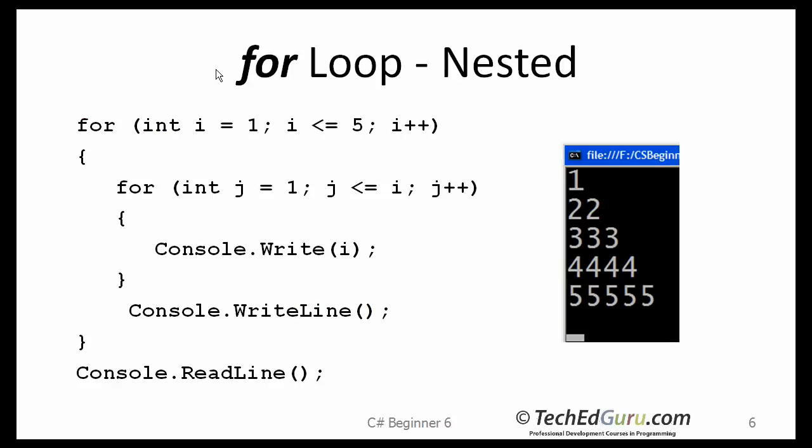Another type of for loop. This is the nested for loop. It is basically the same type that I showed you earlier except there are two of them here, one within another.